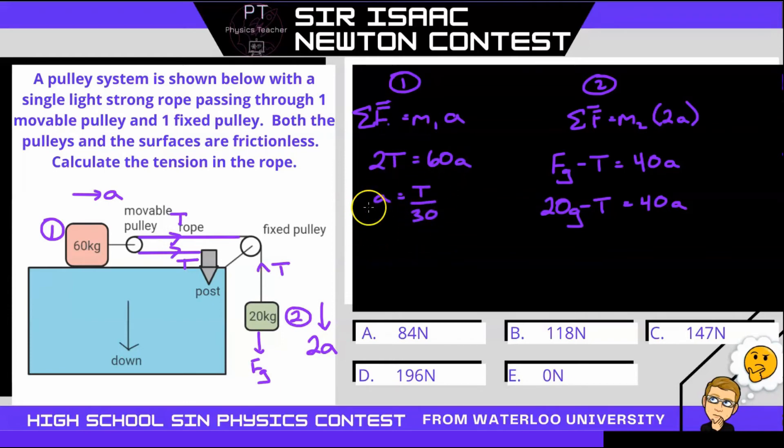And now I can substitute that value for acceleration into our second equation, which gives us 20G minus T is equal to 40 times tension over 30. So now I have one equation with one unknown, and that's tension. So let's collect those terms.